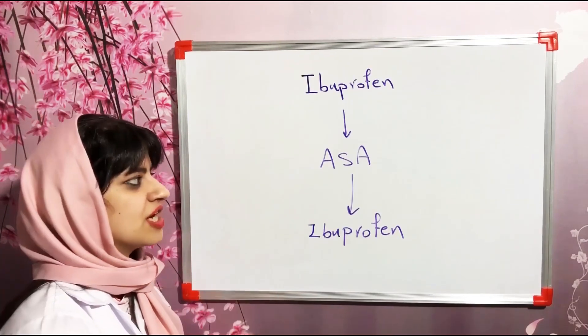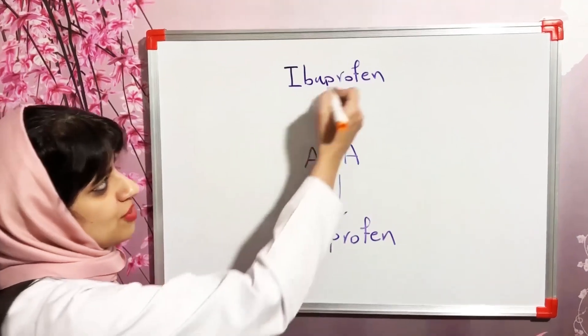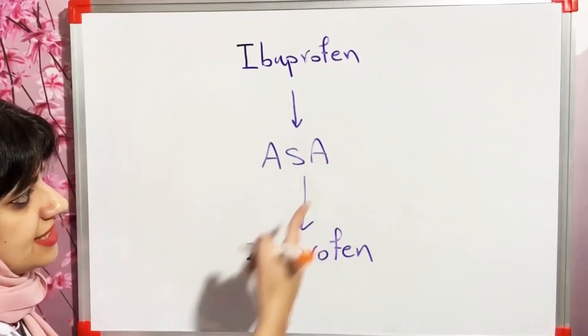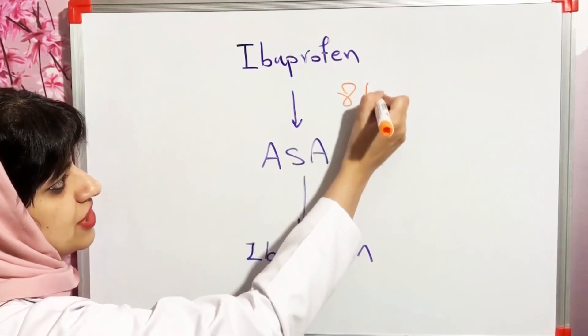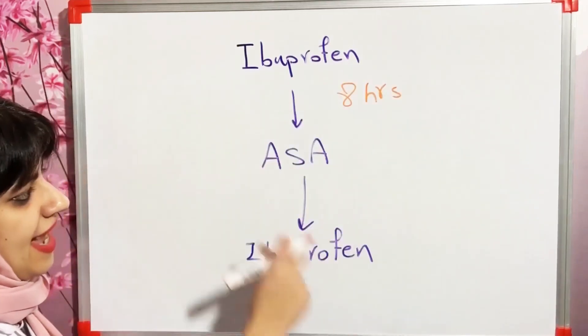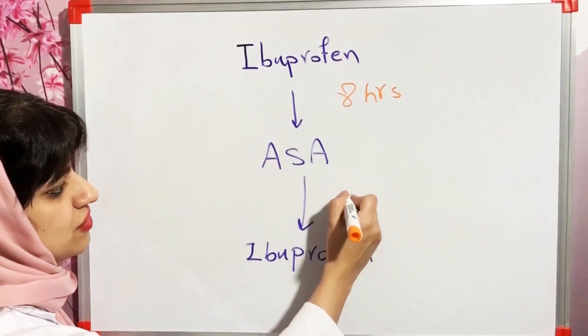How should we do that? When ibuprofen is administered, the next dose of aspirin should be at least eight hours later. And when aspirin is administered, the next dose of ibuprofen should be at least two hours later.